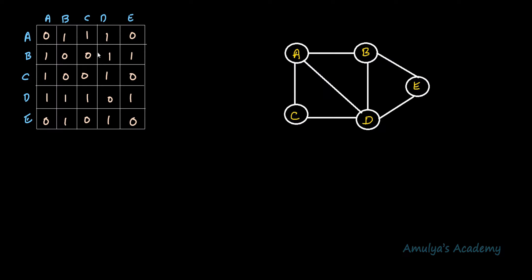In the adjacency matrix representation we create a K by K matrix first, where K is the number of nodes present in the graph. Both the row and column of the matrix represent the nodes of the graph. If there is an edge between two nodes we store the value 1, and if there is no edge between two nodes we store the value 0. We can represent a graph using an adjacency matrix like this.